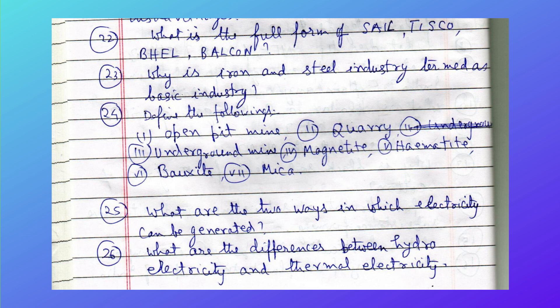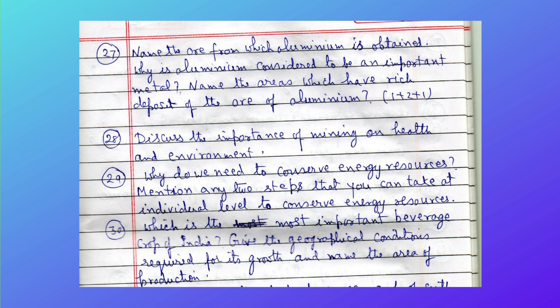What are the two ways in which electricity can be generated? What are the differences between hydroelectricity and thermal electricity? Name the ore from which aluminium is obtained and why is aluminium considered an important metal. Name the area which has a rich deposit of aluminium ore. Discuss the impact of mining on health and the environment. Mention any two steps you can take at the individual level to conserve energy resources.